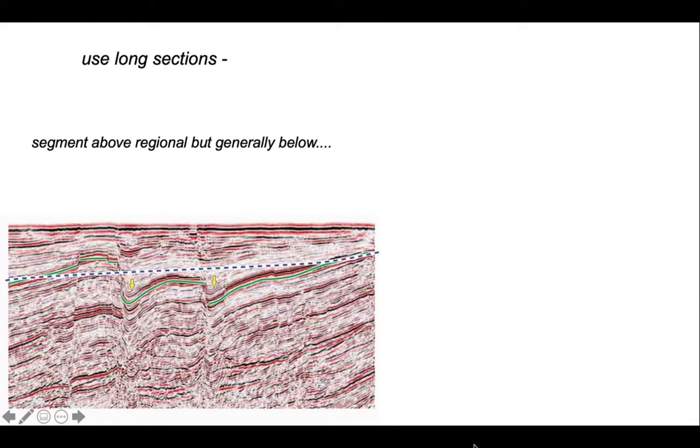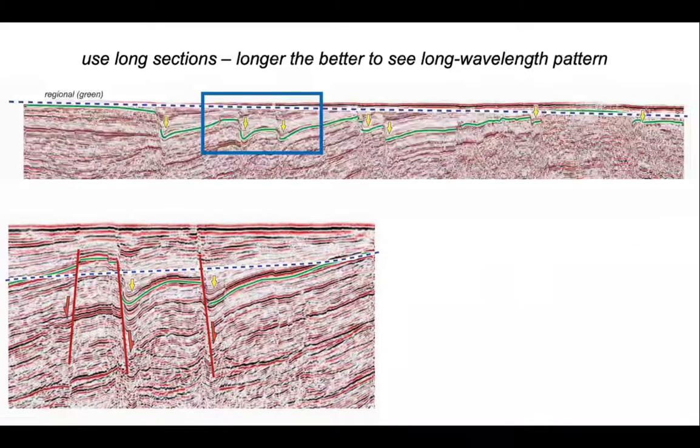But generally, the green horizon has gone down below its regional. I think on balance, therefore, you'd make an interpretation something like this, where the units that are down-thrown are in the hanging wall to normal faults. So it's worth emphasizing again, it's worth using the longer sections you can get hold of.